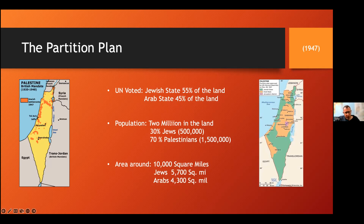By 1947, the population of the land had grown to around 2 million people — 30 percent Jews and 70 percent Palestinians. The Jews were concentrated in cities, making them about 50 percent of urban populations in Tel Aviv, Jerusalem, and Tiberias. In the countryside, however, it was still about 90 percent Arab. So the 30 percent Jewish population received 55 percent of the land, while the 70 percent Palestinian population received only 45 percent. This was not perfect, but was the best result for the Zionists — the Arabs, of course, did not agree.